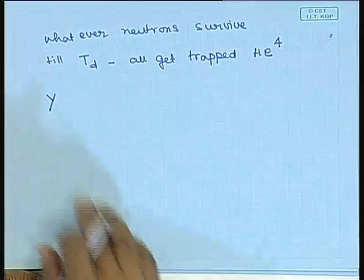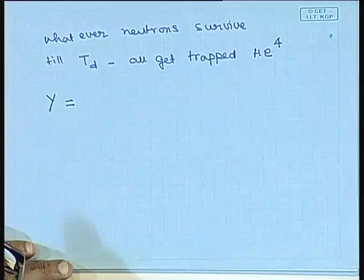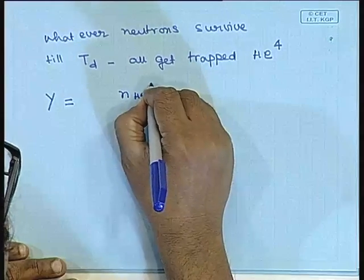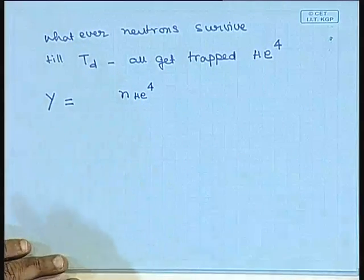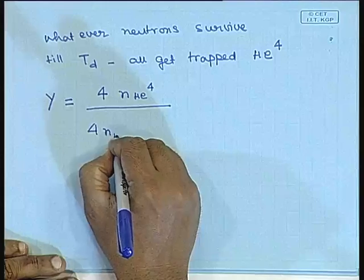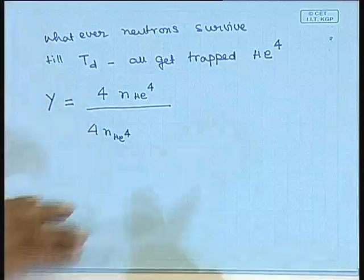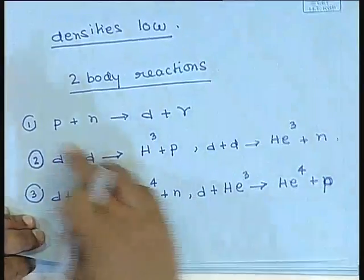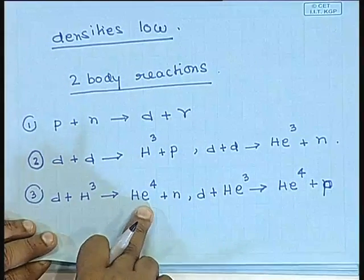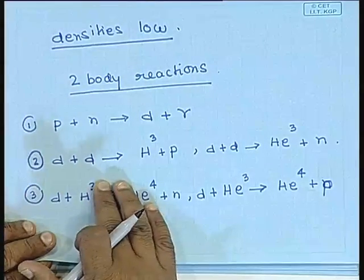The neutron abundance at T_d all gets converted into helium-4. The helium-4 abundance by weight Y is the neutron abundance expressed by weight. When you work it out, finally you only have two things in abundance: helium-4 and hydrogen (the protons). Some protons find neutrons to form deuterons, which then become helium-4; the remaining protons are the leftover hydrogen.